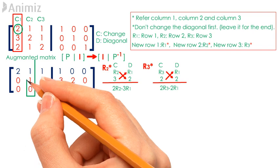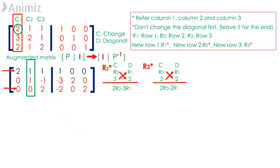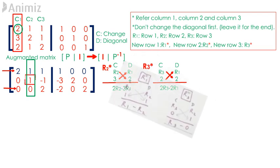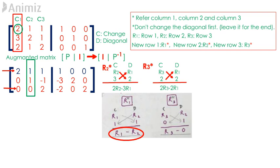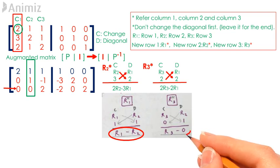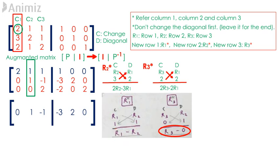Moving on to our second step, we now refer to column 2 of the matrix. Row 1 and row 3 contain the elements that will be changed. For row 1, the element to be changed is 1, whereas the diagonal element in this column is 1, which exists in row 2. Using the determinant formula AD minus BC, new row 1 equals R1 minus R2. New row 3 equals R3 minus 0. Row 2 remains unchanged. At this point, all elements in column 2 besides the diagonal element have been changed to 0.